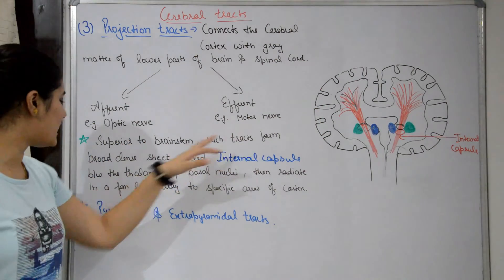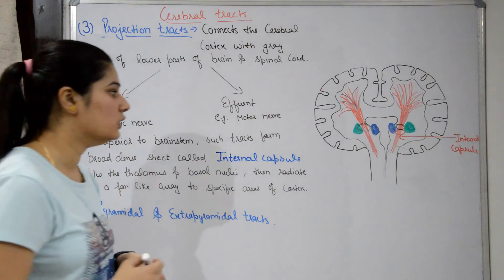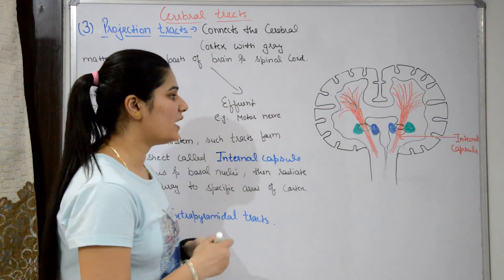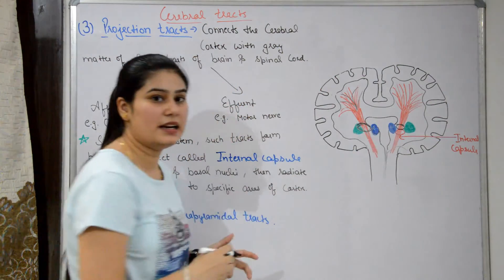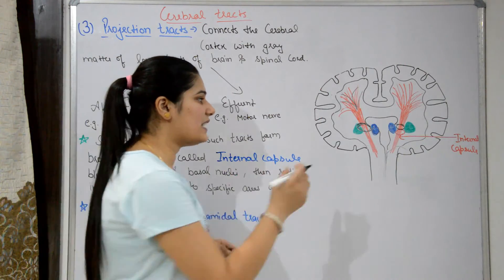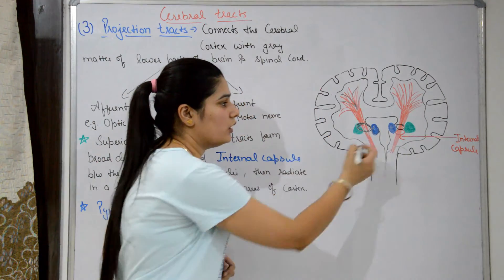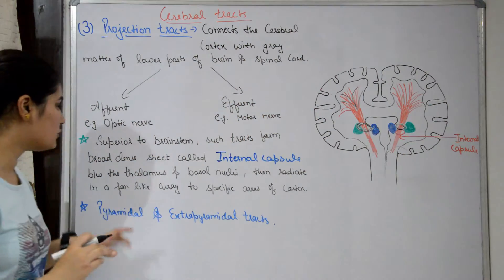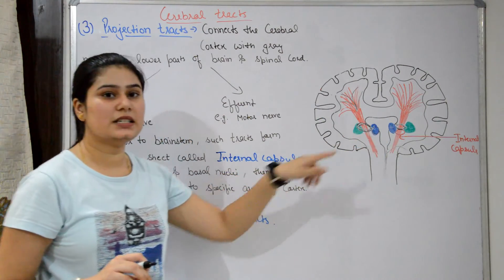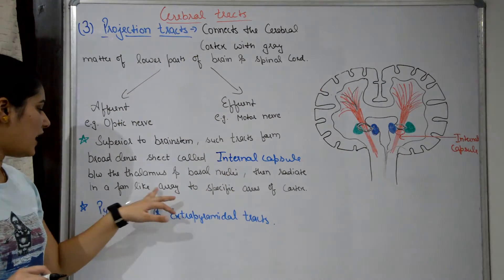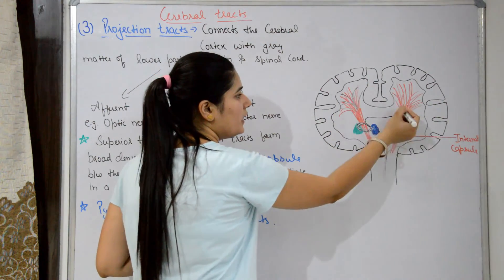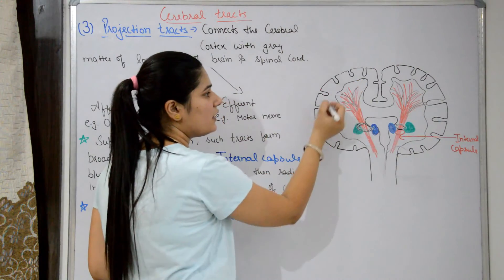One important point: superior to the brainstem — which includes midbrain, pons, and medulla — the projection tracks form a broad, dense sheet called the internal capsule. The internal capsule is located between the thalamus and basal nuclei. From there, it radiates in a fan-like area to specific areas of the cortex.